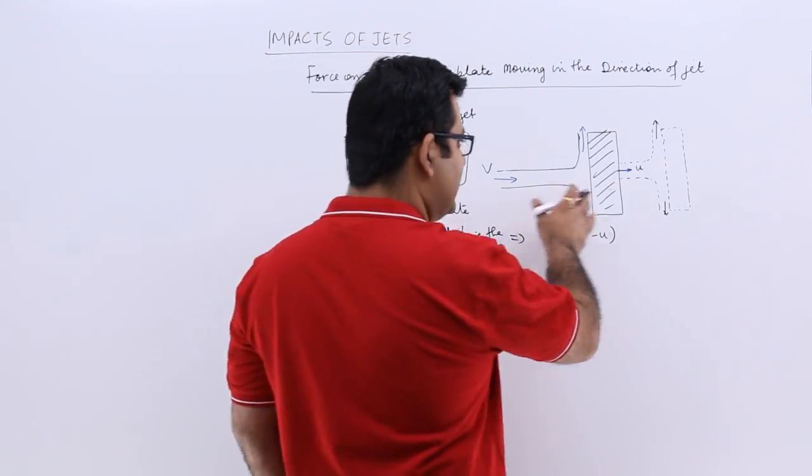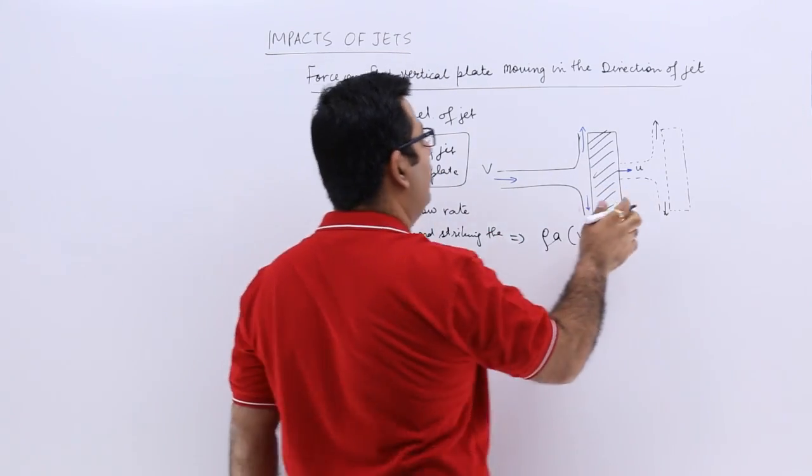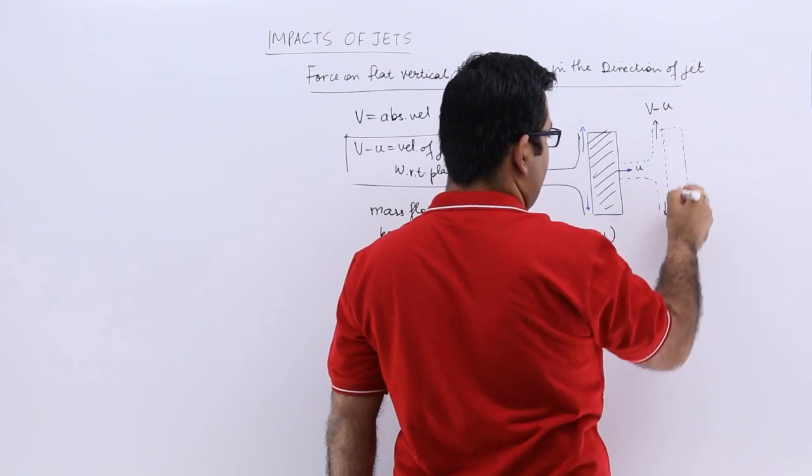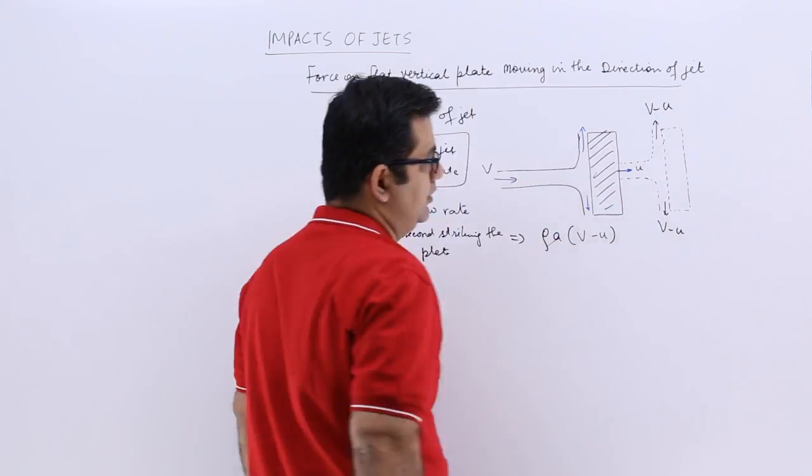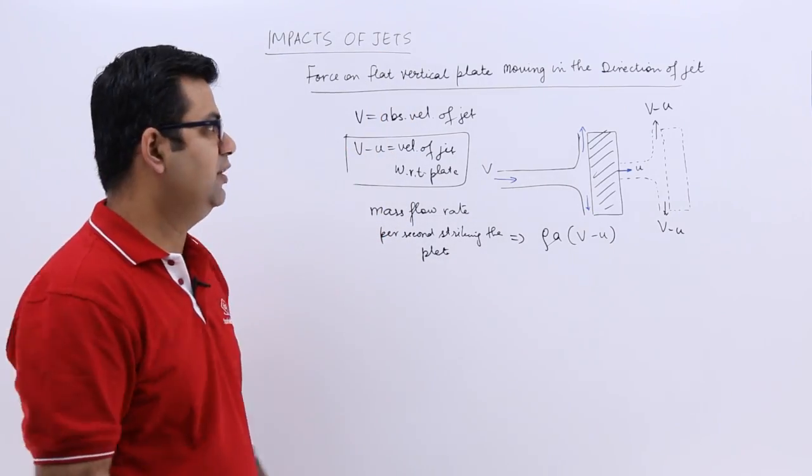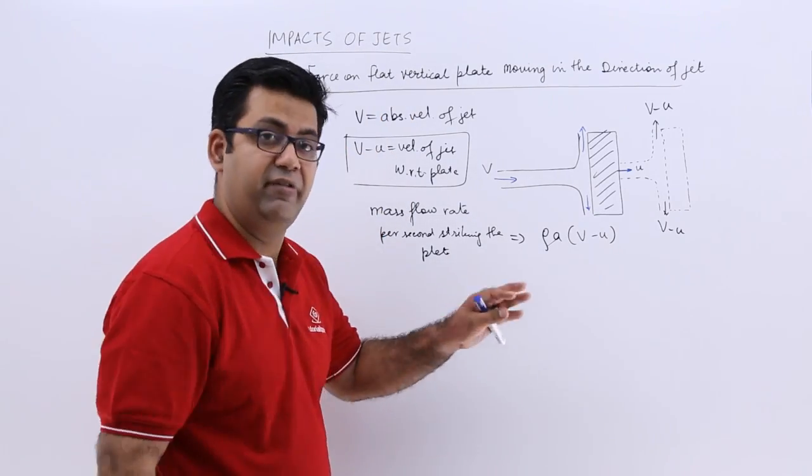So when it strikes with this velocity, it comes out with the same velocity as well. So the jet is being moved out in the same direction with velocity v minus u.